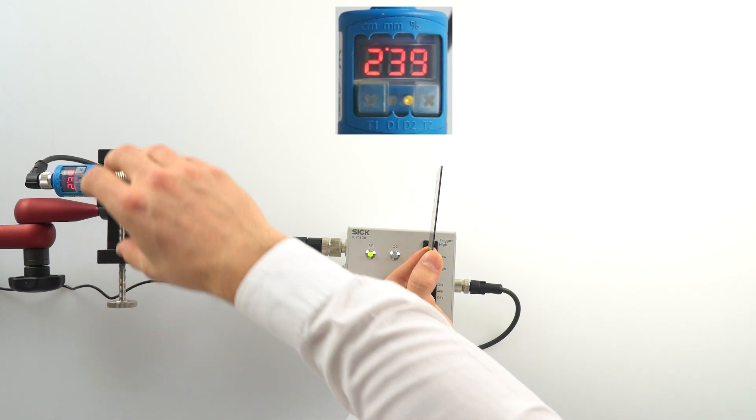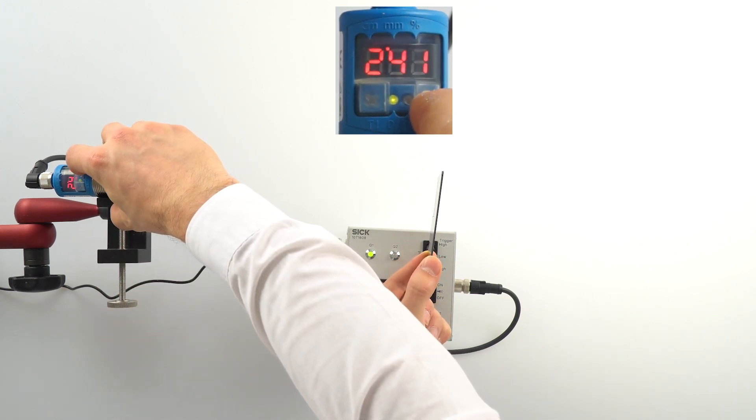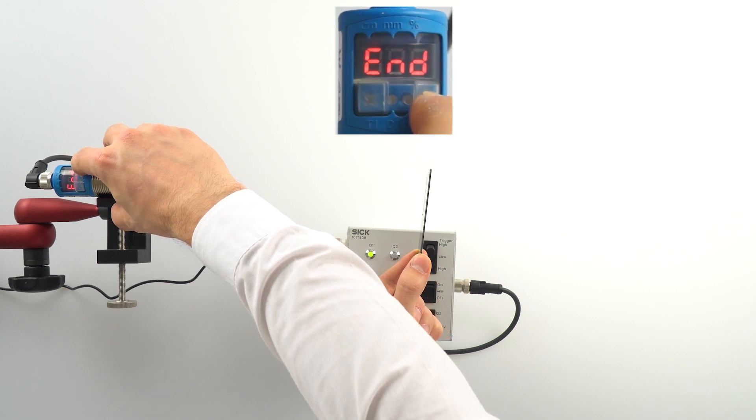Press and hold T2 until end appears in the display. And now the limit switching point is saved.